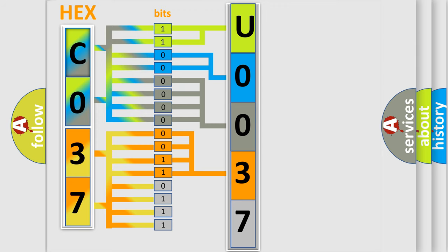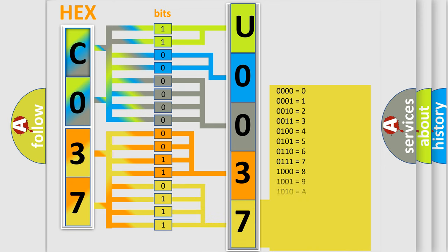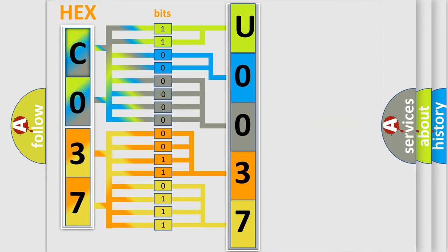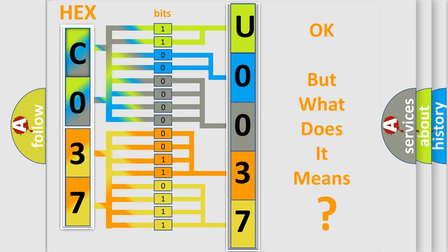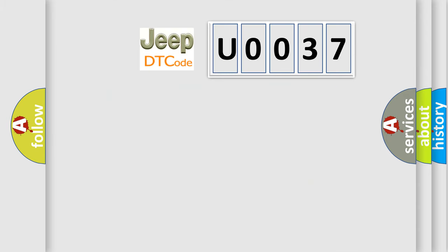A single byte conceals 256 possible combinations. We now know in what way the diagnostic tool translates the received information into a more comprehensible format. The number itself does not make sense to us if we cannot assign information about what it actually expresses. So, what does the Diagnostic Trouble Code U0037 interpret specifically for Jeep car manufacturers?